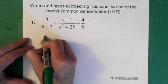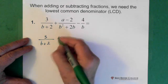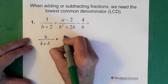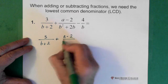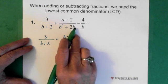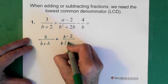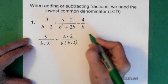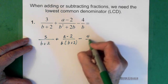So then we have 3 over b + 2 plus (a - 2). Now when we factor here we're pulling out the b out of both terms here. So we pull out the b and we're left with b + 2, and then minus 4 over b.